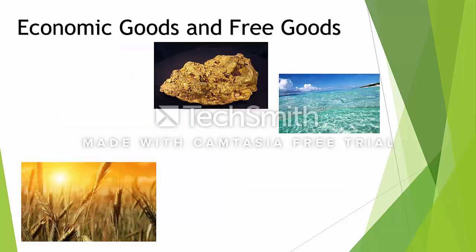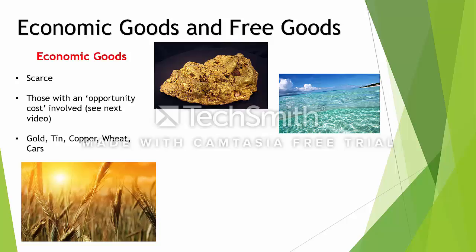The final thing to look at in this video is economic goods and free goods. Economic goods are pretty much everything we've already talked about — things like gold, copper, wheat, cars, apples — things that are scarce. In economics, economic goods have an opportunity cost. Briefly, an opportunity cost means you have to give up something in order to do something else. For example, if you had one piece of tin and wanted to make a roof, but the next option was to use it for electrical wiring, if you did one you've given up the other. That's opportunity cost.